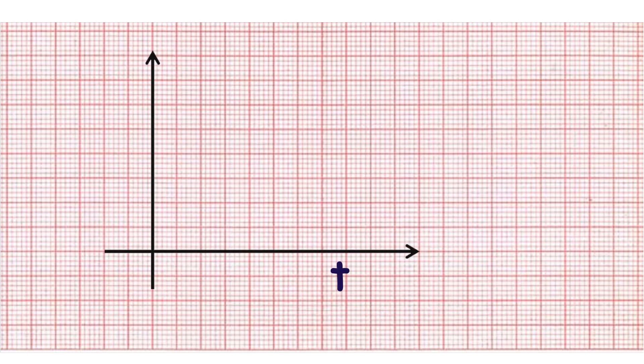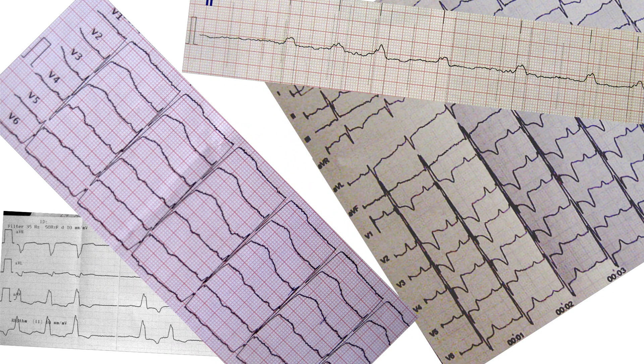The horizontal axis represents time. The vertical axis represents voltage. Leads may be printed in different ways depending on the ECG machine.